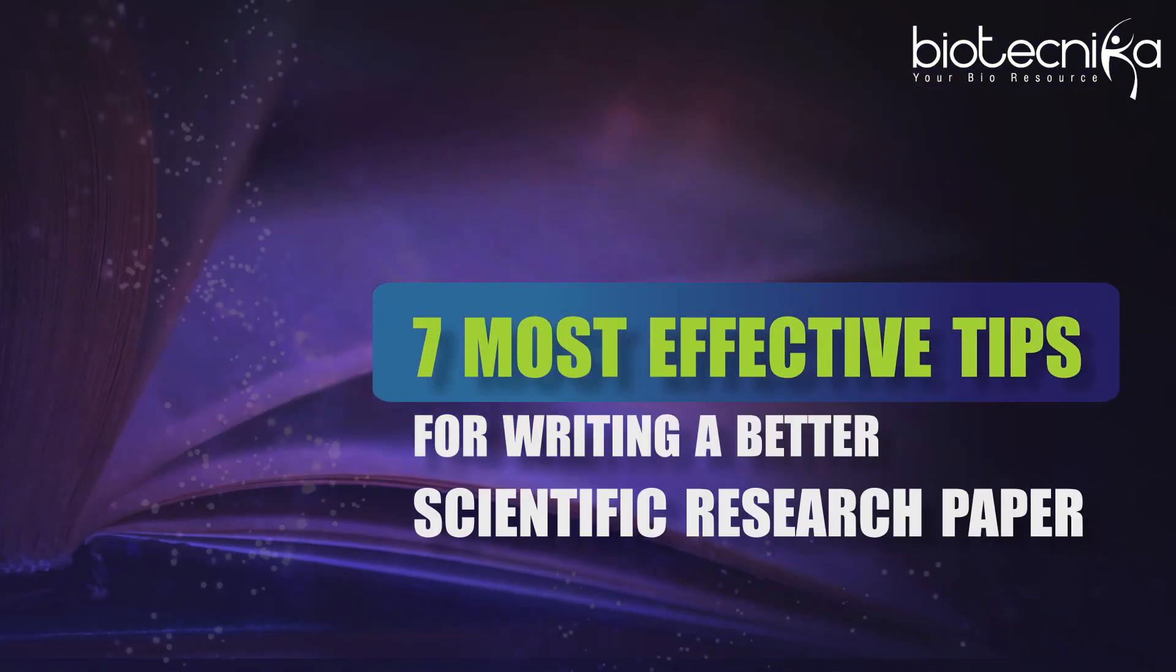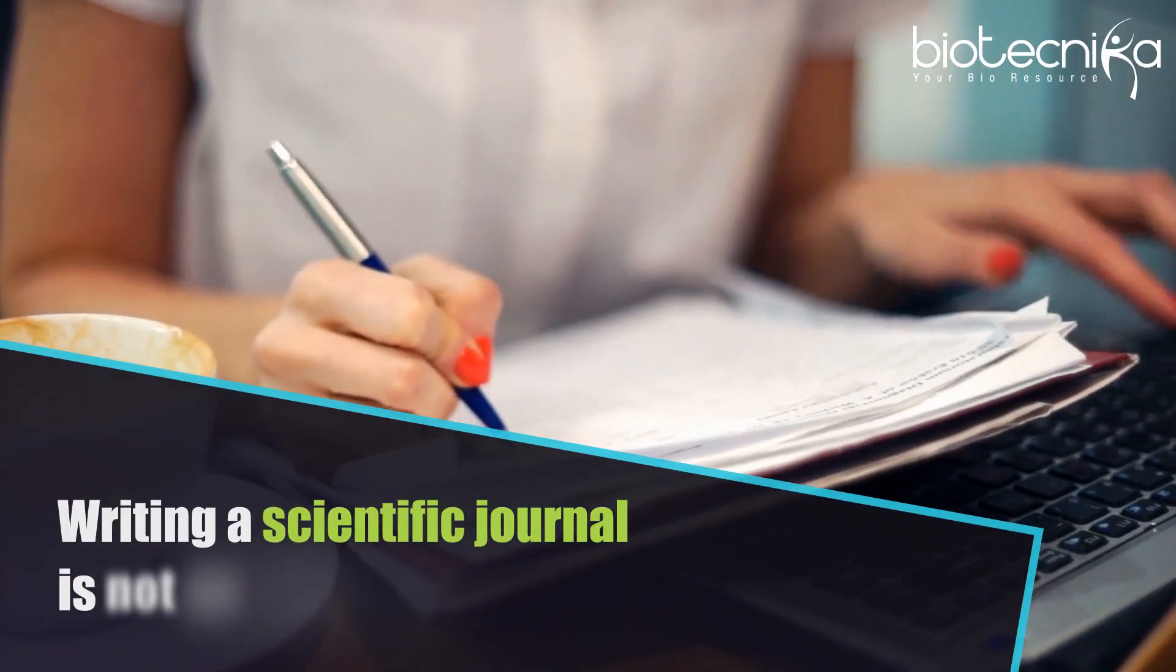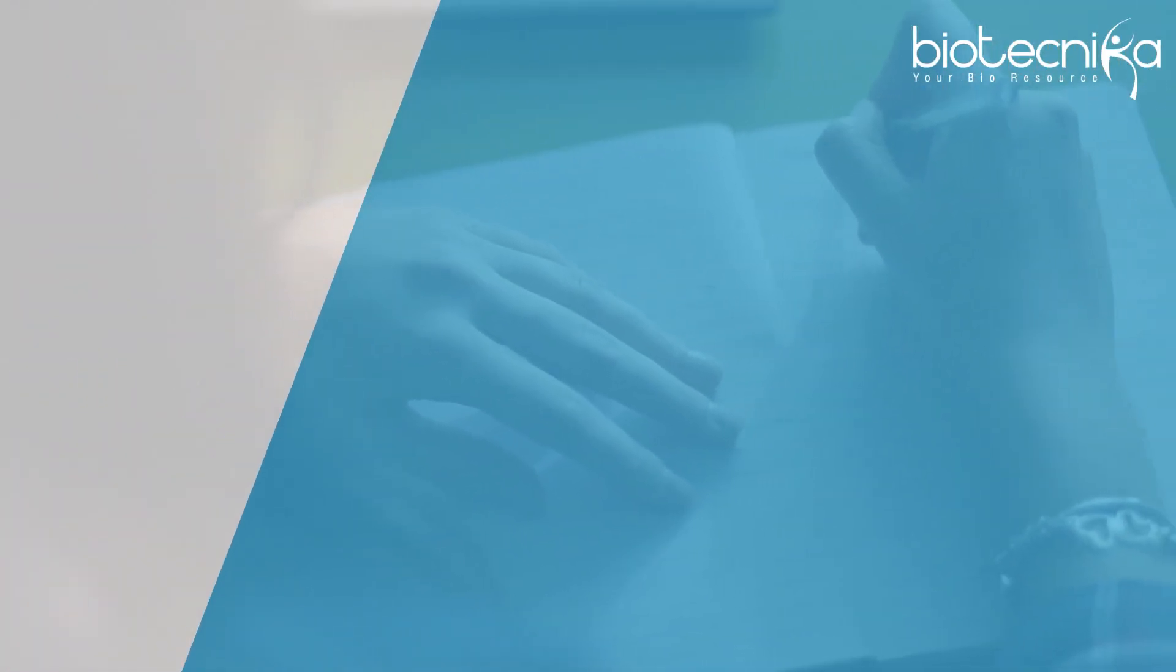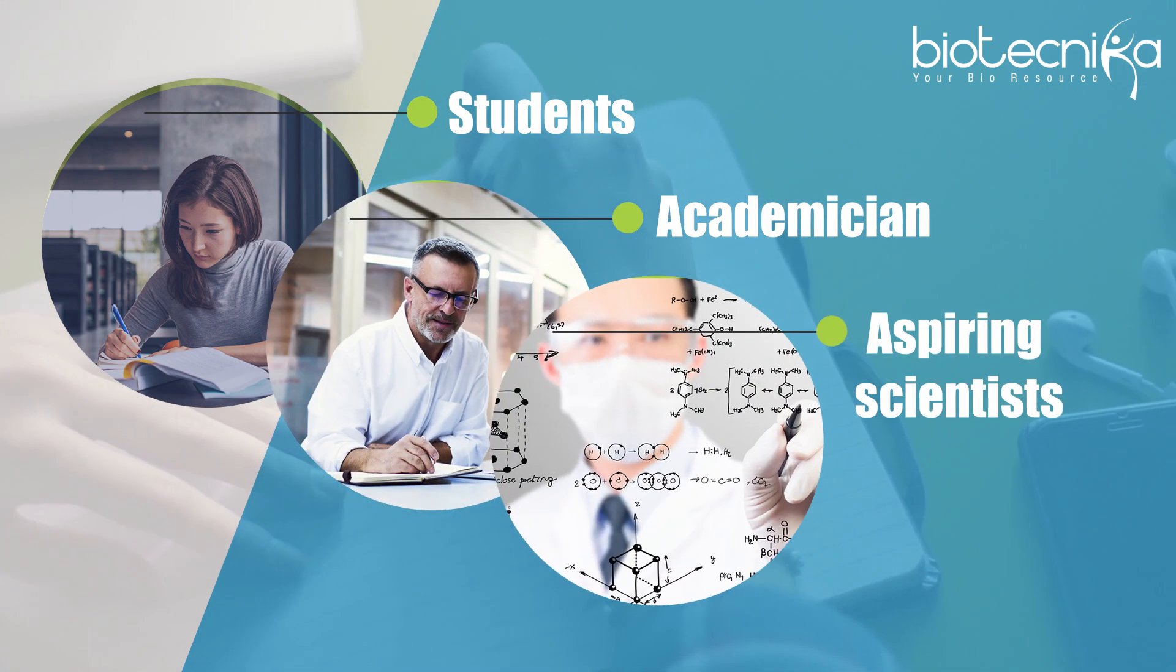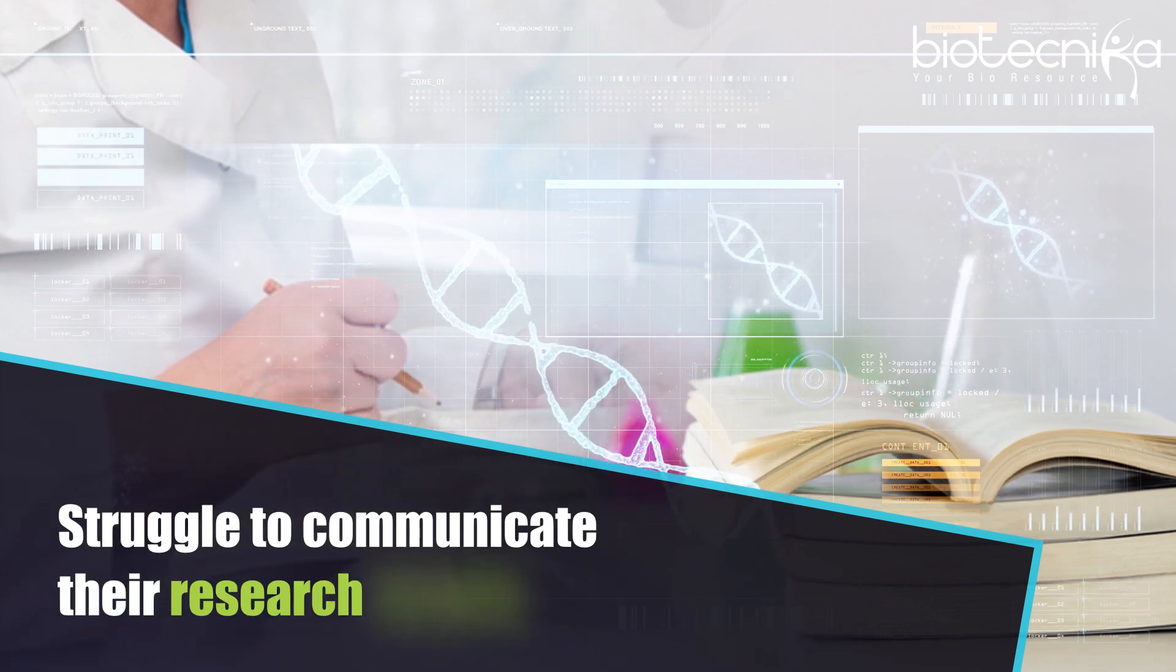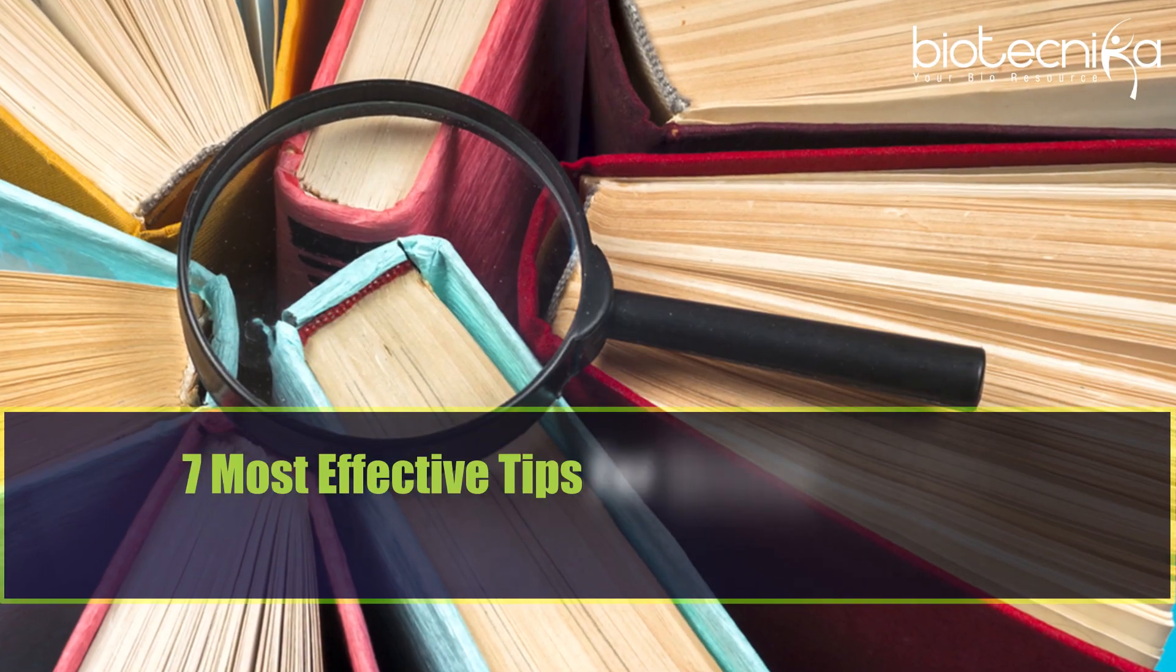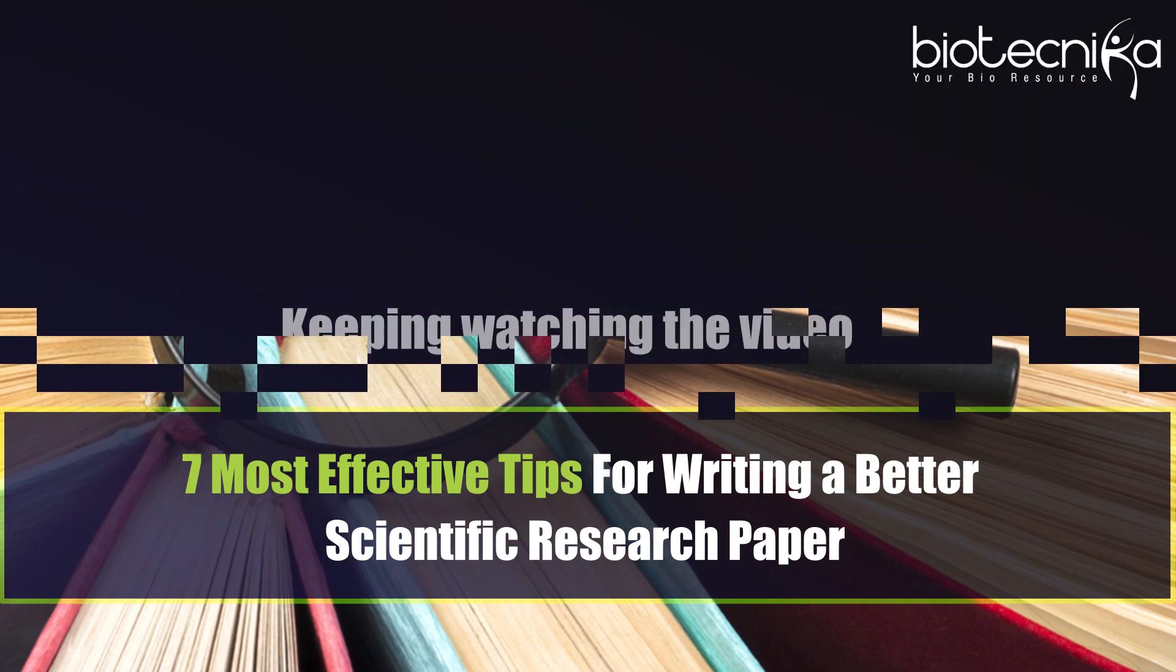7 Most Effective Tips for Writing a Better Scientific Research Paper. Writing a scientific journal is not an easy task. Scientific papers require high standard writing skills, considering that they are going to be referred by students, academicians, and aspiring scientists. However, not all scientific papers are as good as we expect them to be. Many researchers struggle to communicate their research results. Let's look at the 7 most effective tips for writing a better scientific research paper.